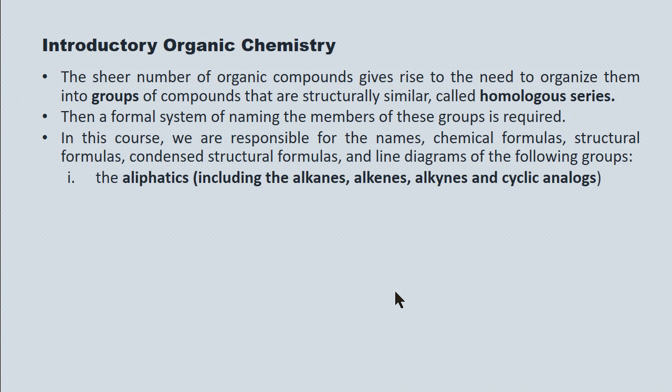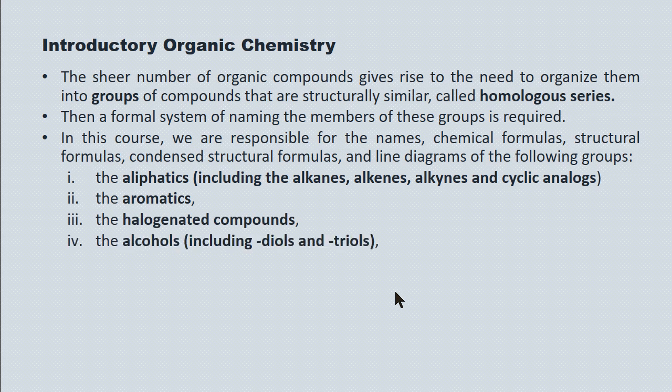The aliphatics, and the aliphatics include three subgrooves. The alkanes, the alkenes, and the alkynes. And each of these have cyclic analogs. The aromatics, and this is new language, but we'll explain the nature of these molecules over the course of the next couple of lectures. The alkanes, including diols and trials. The acids, and the esters.